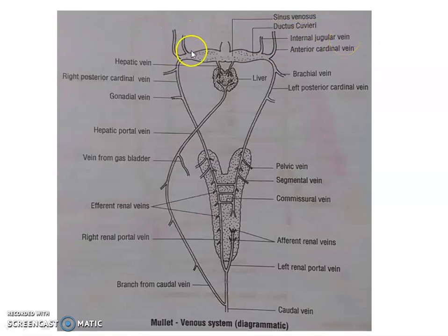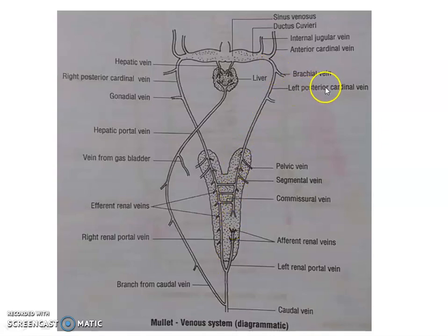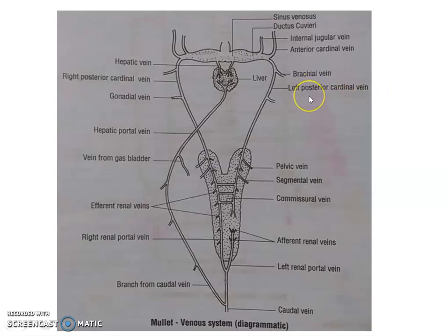From the posterior part of the body, blood is collected via the posterior cardinal vein. For convenience of study, the whole system can be named the posterior cardinal system — that is, the various veins which collect blood from various body parts and pour it into the posterior cardinal vein, together with the posterior cardinal vein itself.